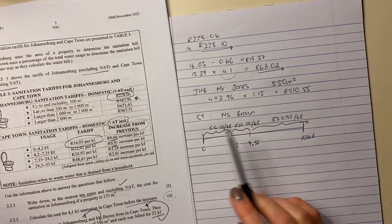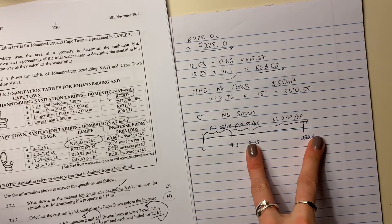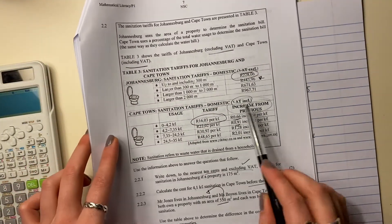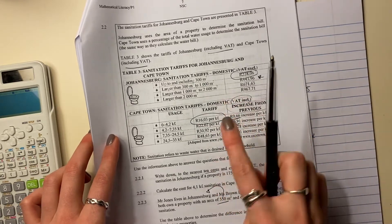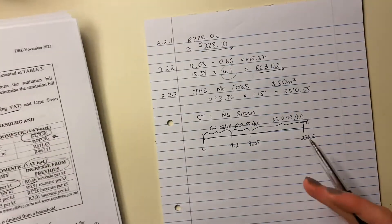She's going to pay 30.92 rand per kiloliter for the kiloliters that are above 7.35. So do you see how I've split it? For the first 4.2, that's what she pays. Then for the next little bit, she pays that. The last little bit, she pays that. It doesn't say before the increase. So you don't have to take this into account. We don't have to look at that information at all. We're only looking at this information.